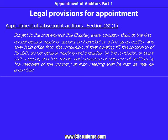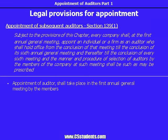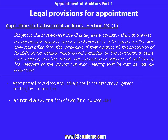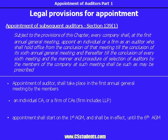The important points are: the appointment of the auditor shall take place in the first annual general meeting by the members. This appointment could be of an individual chartered accountant or a firm of chartered accountants. Over here, the firm also includes a limited liability partnership. The appointment shall start on the first annual general meeting and shall be in effect until the sixth annual general meeting of the company.